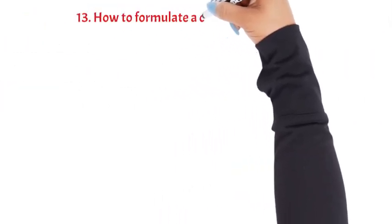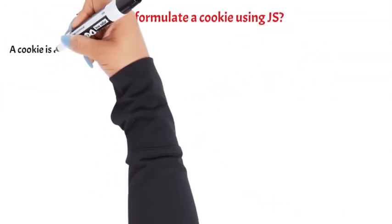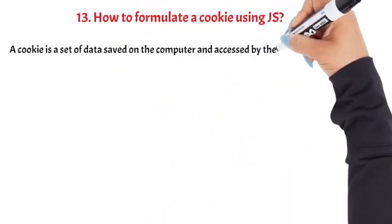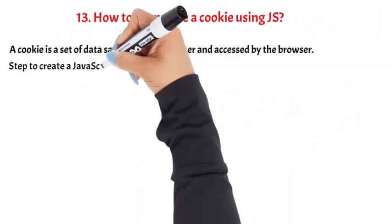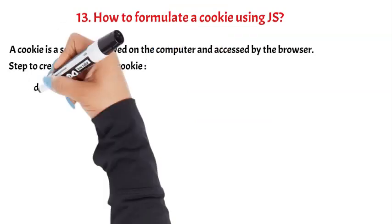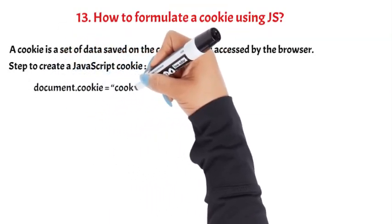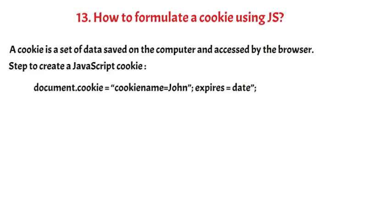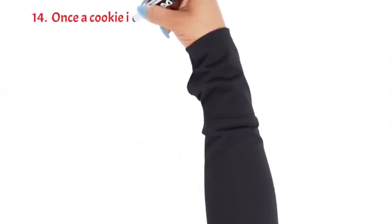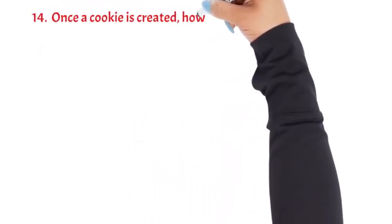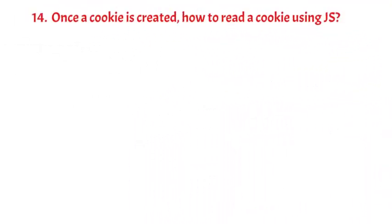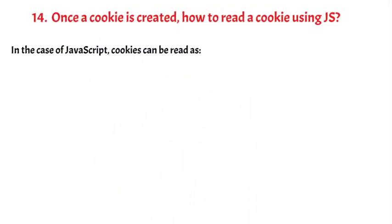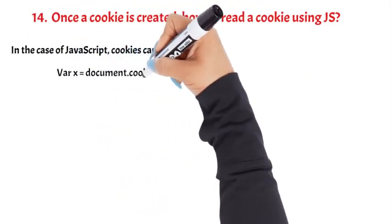Question 13: How to create a cookie using JS? A cookie is a set of data saved on the computer and accessed by the browser. To create a JavaScript cookie: document.cookie = 'cookieName=John; expires=[date]'. Question 14: Once a cookie is created, how to read a cookie using JS? In JavaScript, cookies can be read as: var x = document.cookie.